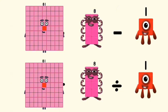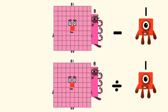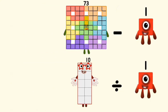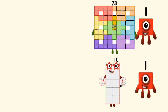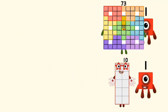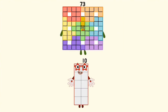81 minus and divided by 8. 83 minus 1 and 10.7 divided by 1 equals 73 and 10.